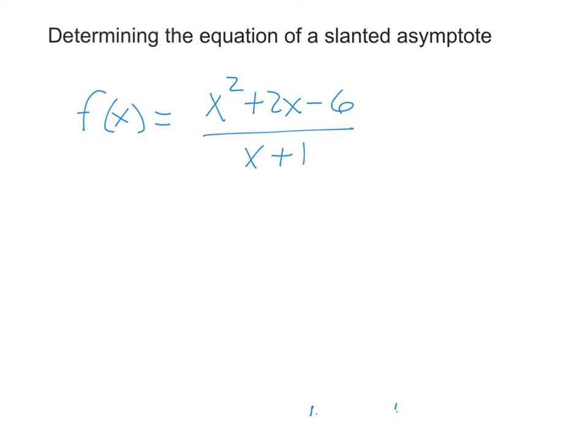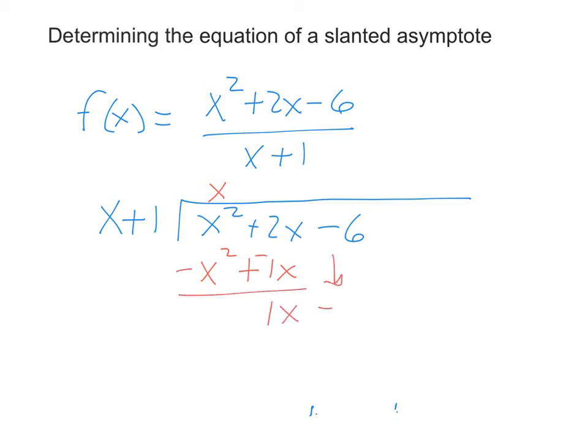And what you want to do is use long division to find the equation of that slanted asymptote. So we're going to set it up that x plus 1 is out here. x squared plus 2x minus 6 is in here. What do you take times x to get x squared? X. x times x is x squared. x times 1 is 1x. And change the signs. Add down. Bring your next term down.